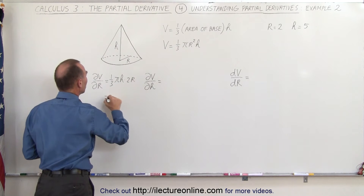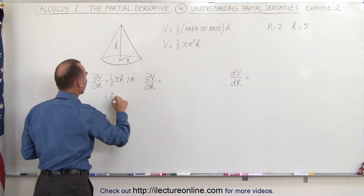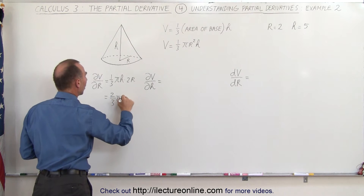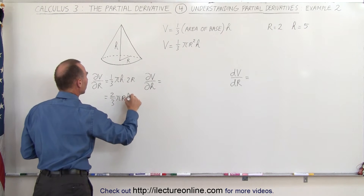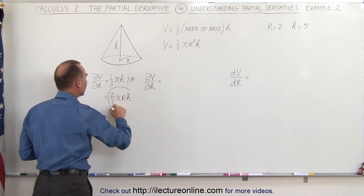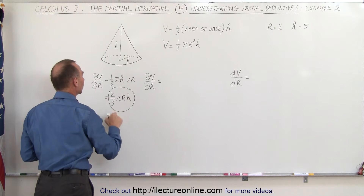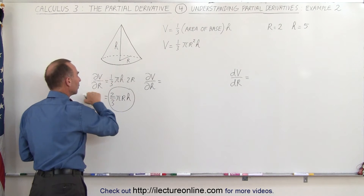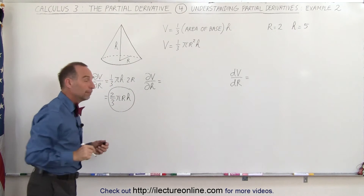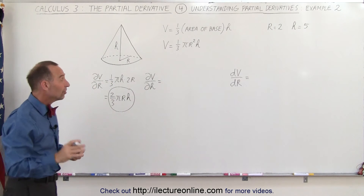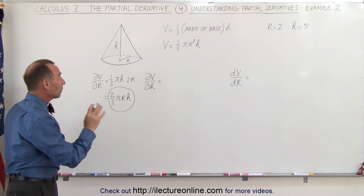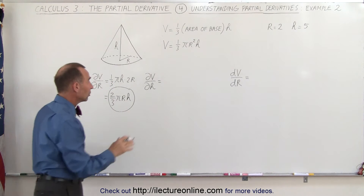This can be written as two-thirds pi r h. That is the partial derivative of the volume with respect to r. Now we do the same with respect to h.